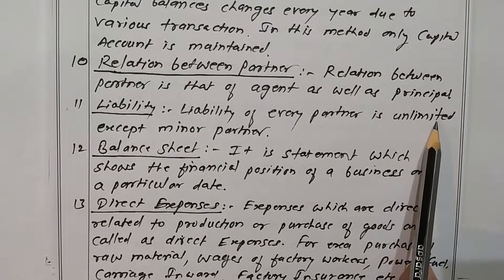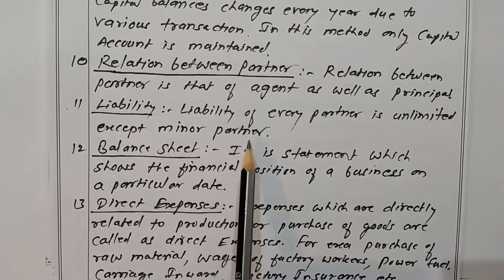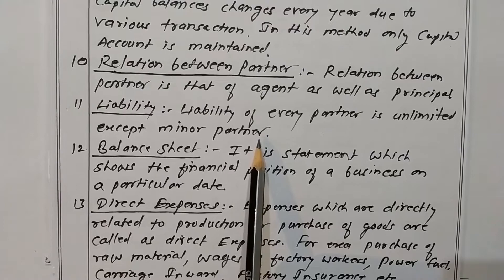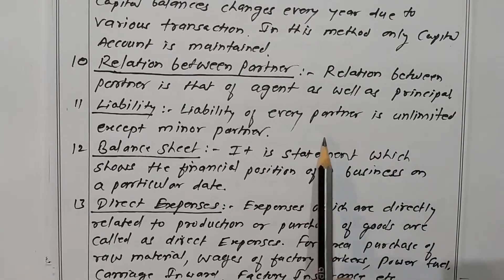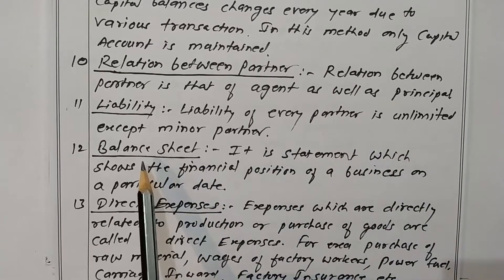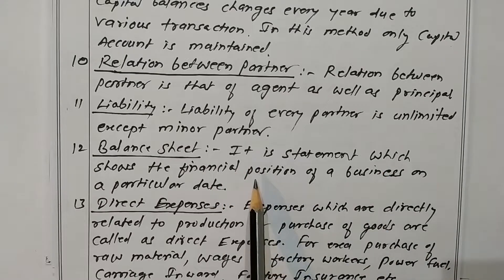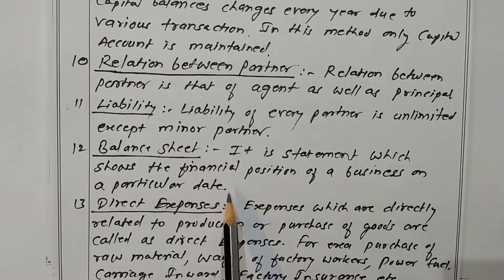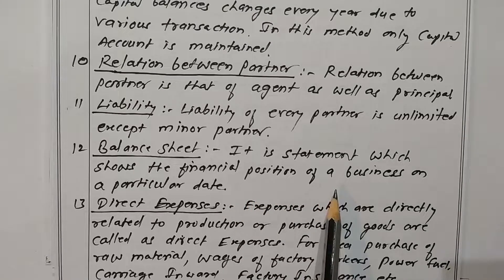The liability of every partner is unlimited except for a minor partner. A minor partner's liability is limited to his share of profits only — he is not liable for the losses of the business. What is a balance sheet? It is a statement which shows the financial position of the business on a particular date, showing total assets and total liabilities.